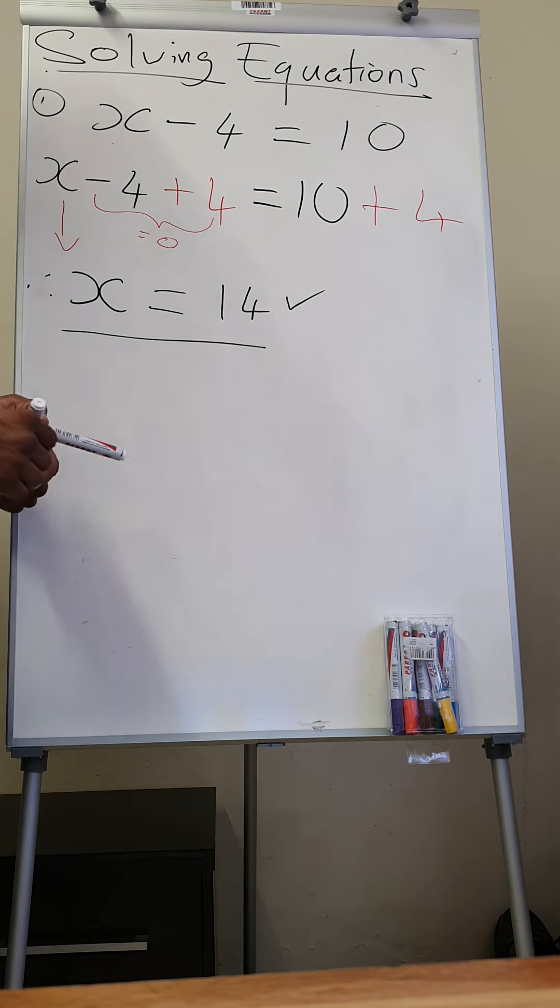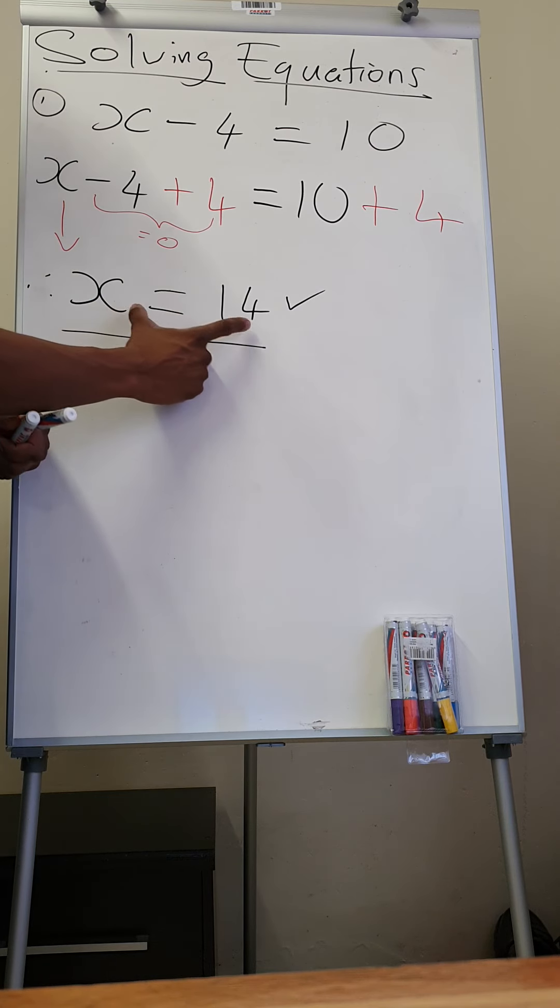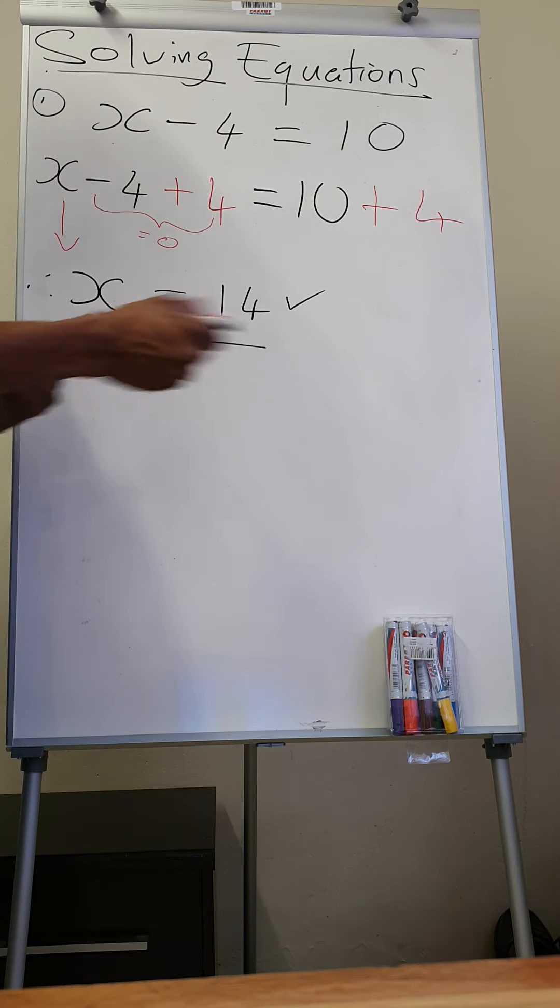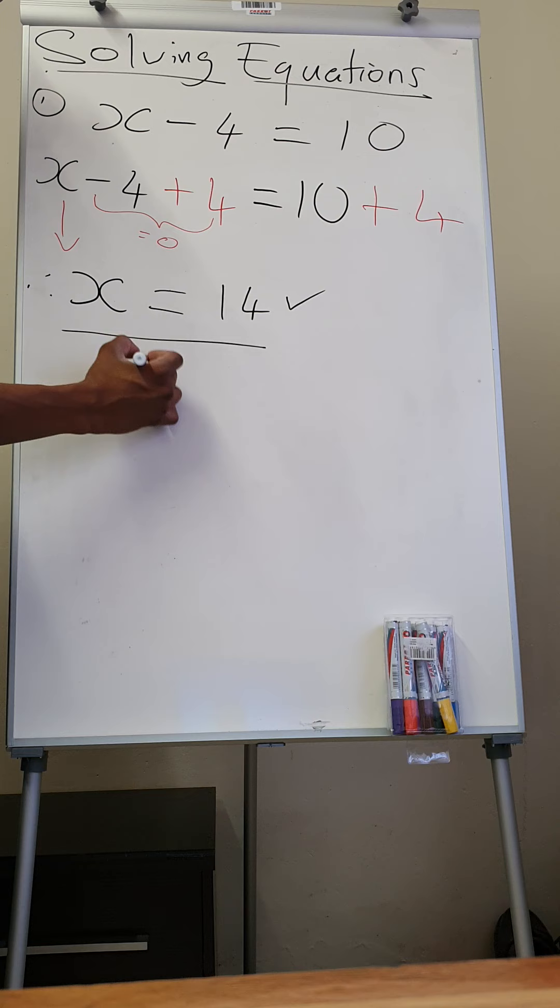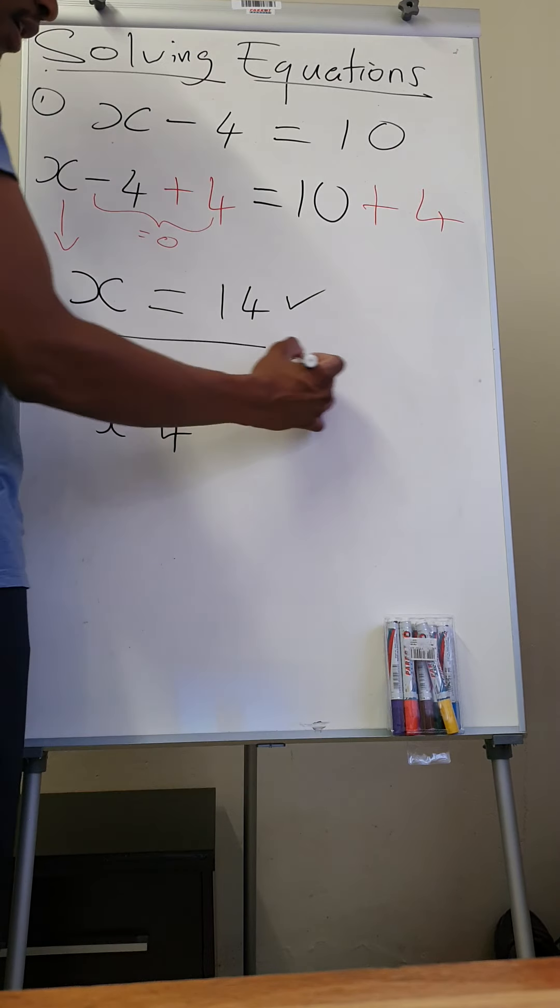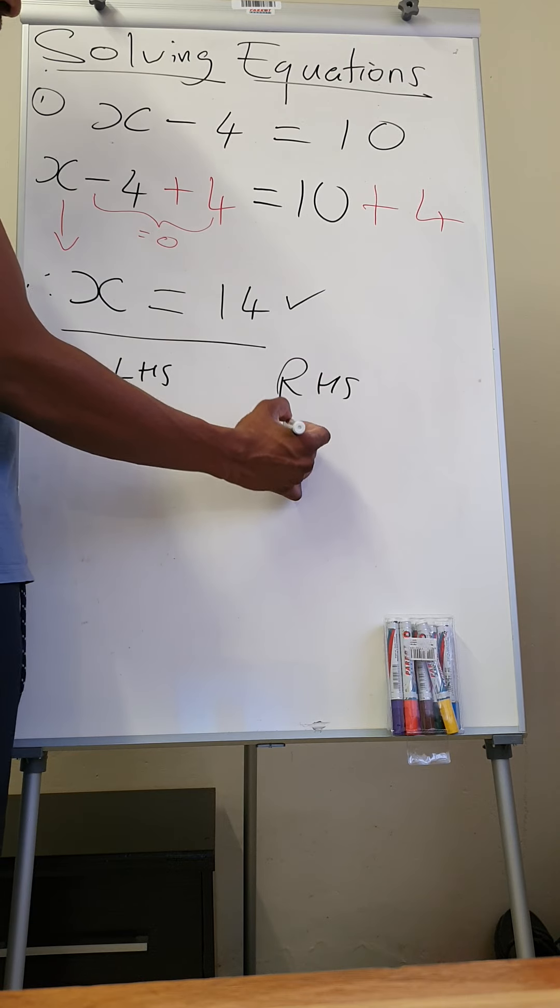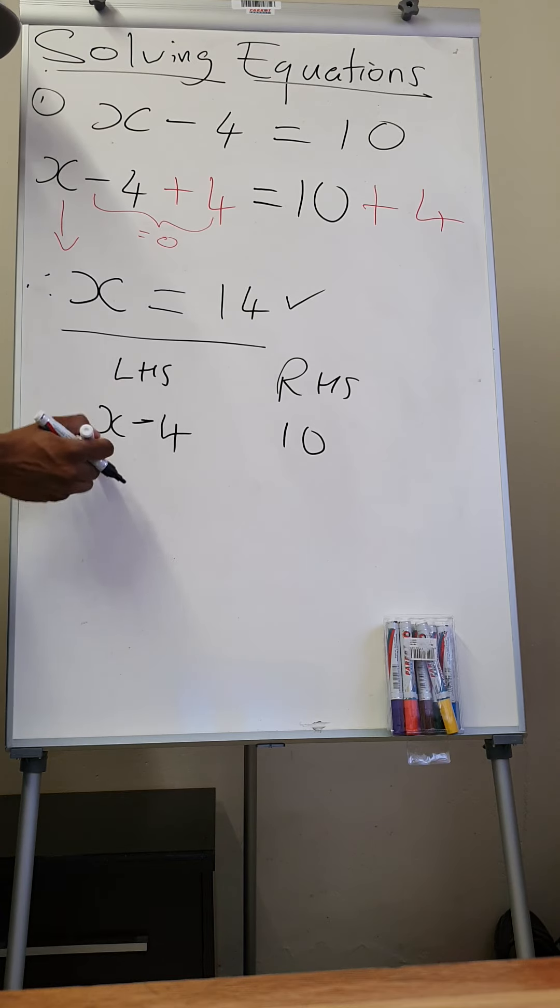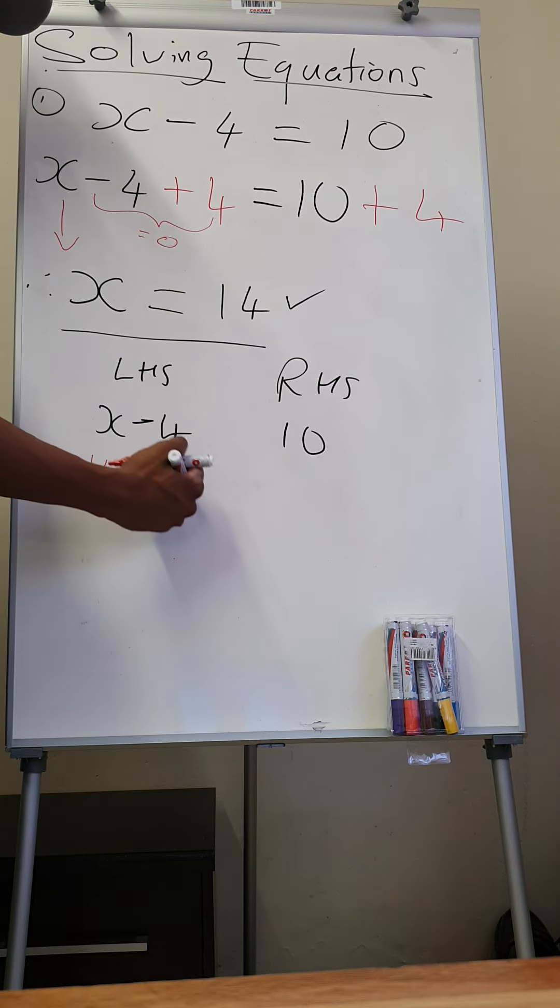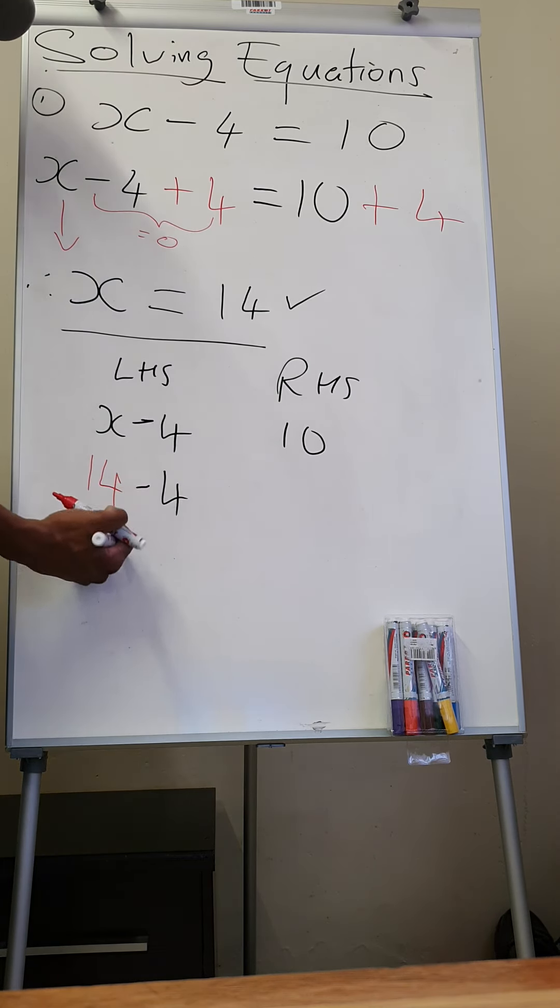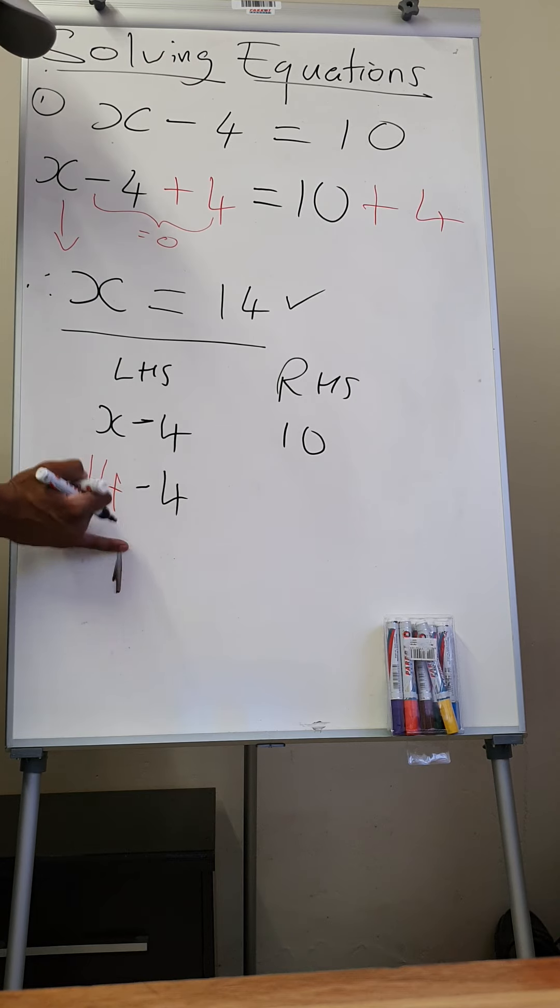So you check now if this is really true. If x is 14, you take this value of x. So how do you check now? I'm just going to write that in detail for the first one. This is my left-hand side. My left-hand side is x minus 4. And my right-hand side is 10. So if x is 14, now 14 minus 4 gives me 10.